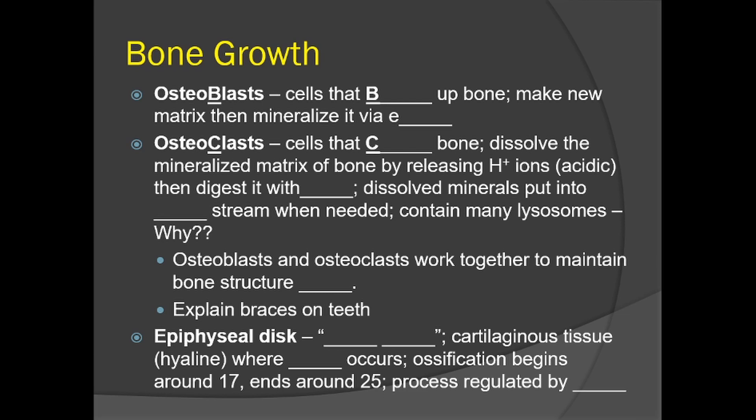This is all part of skeletal or bone homeostasis, where blasts are building up and clasts are breaking down. Osteoclasts contain many lysosomes, which are organelles within the cell that contain many enzymes. That's why it's important for osteoclasts to have so many of them — they are so reliant on enzymes to do their job. Osteoblasts and osteoclasts work together to maintain bone structure homeostasis.